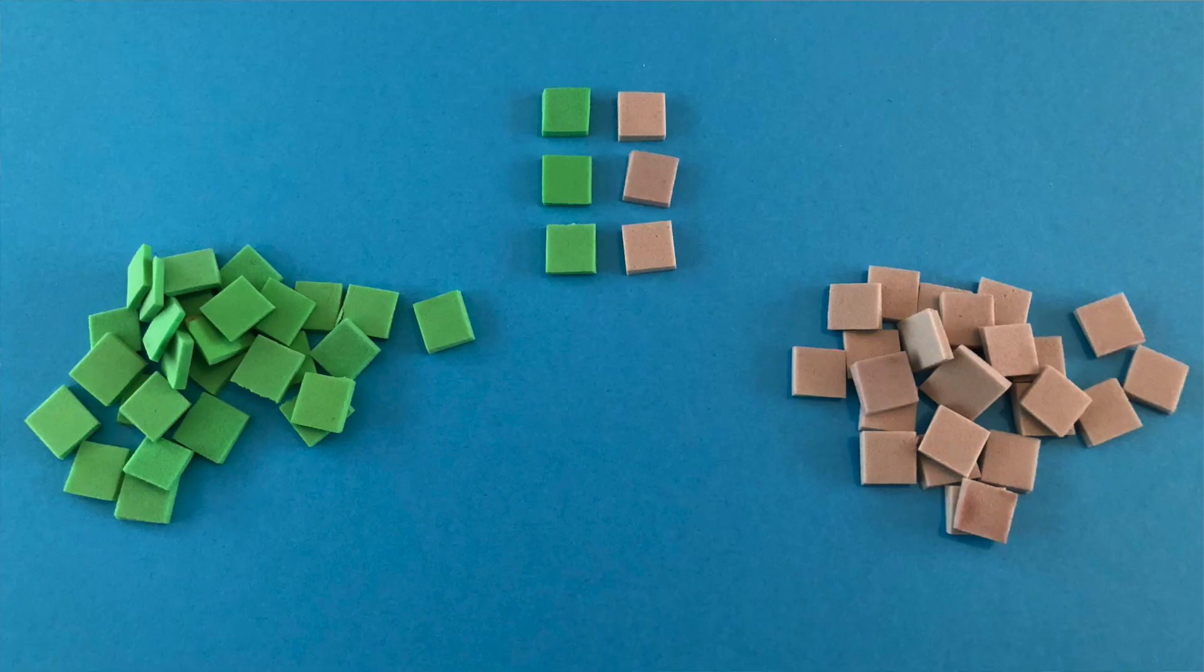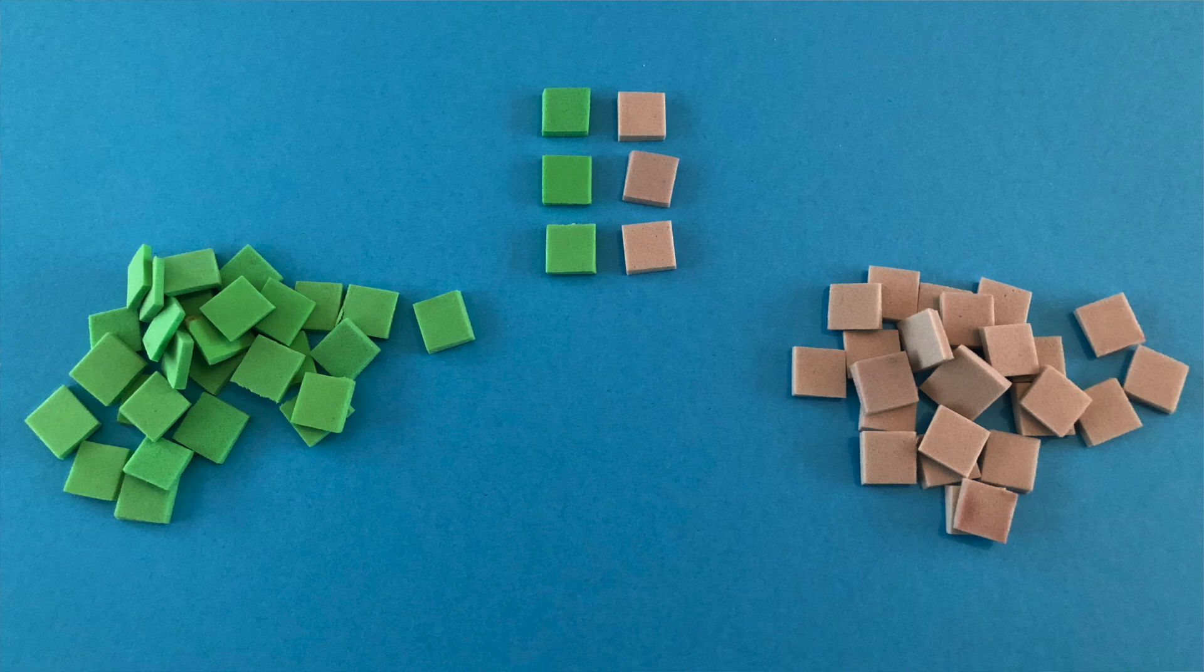The materials being used will be these algebra tiles. I made these myself out of two millimeter scrapbooking foam, and they work nicely. They're one centimeter by one centimeter. I have green for the positive and gray for the negatives, and these colors correspond to the Montessori materials, where the green is what they use for the units, and the gray is what they use to represent negative amounts.